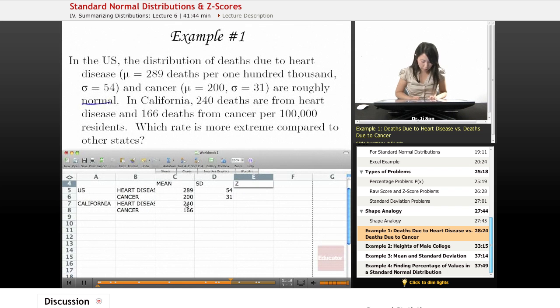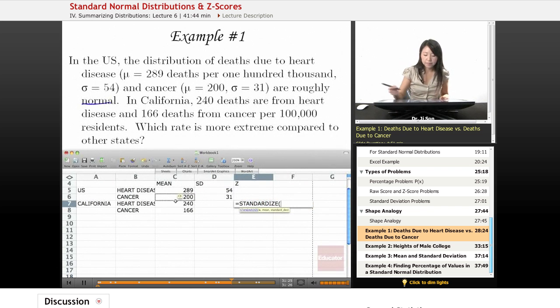And what we might want to know is the z-score. So I might just put standardized and put in my x, put in the population mean, the theoretical mean I want to compare it to, and my standard deviation.